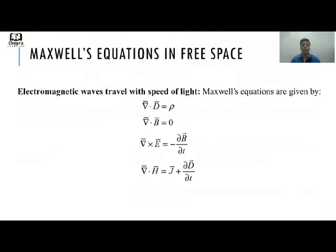Now let's look at Maxwell's equations in free space. We already know that Maxwell's equations are given by: div D = ρ, div B = 0, curl E = −∂B/∂t, and curl H = J + ∂D/∂t.